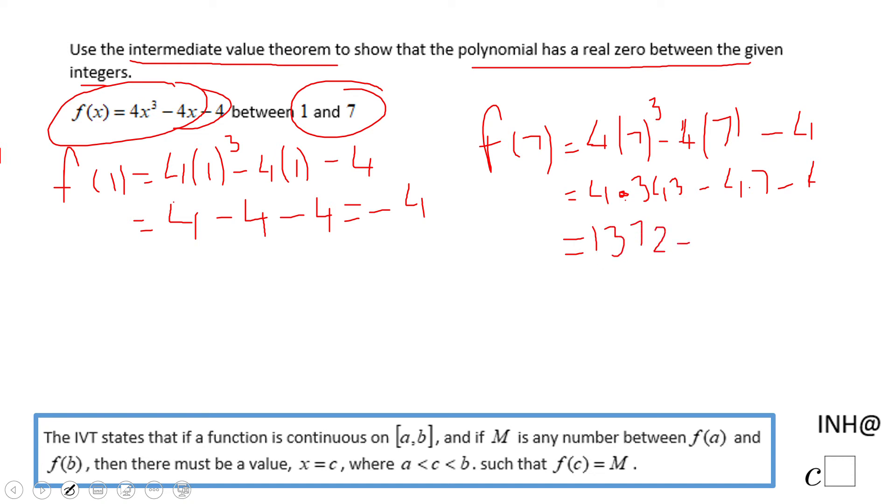Minus 28, minus 4, so what do we get? We get 1340.